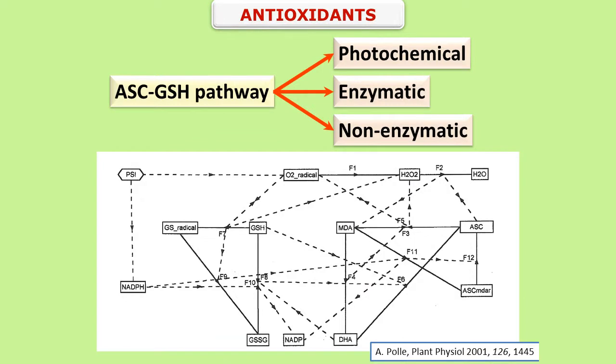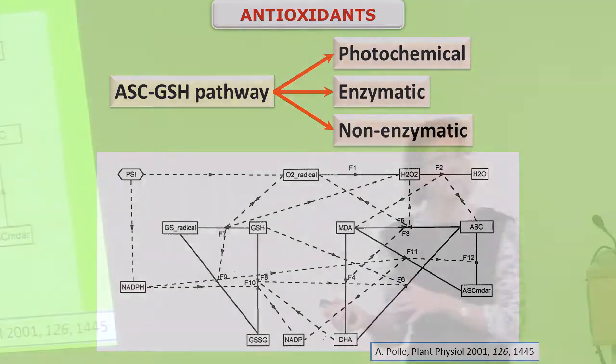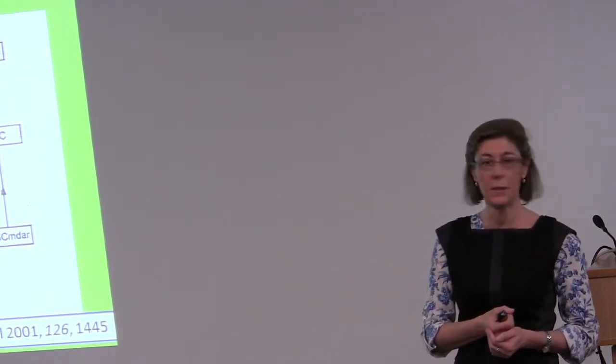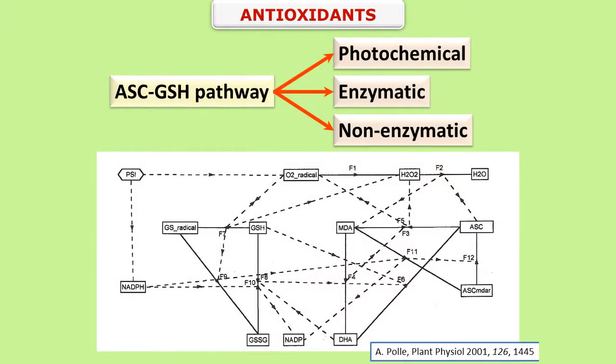Plants have different defense mechanisms to detoxify reactive oxygen species. On this slide, you can see one of the first models reported about the ascorbate glutathione pathway, which is one of the most important metabolic pathways to detoxify reactive oxygen species. This pathway involves a number of photochemical, enzymatic and non-enzymatic steps. This model includes a constant source of electrons from photosystem one (PS1), which has two competitive branches — one leading to the photogeneration of superoxide radicals and the other to the photoproduction of NADPH, the reducing power necessary to detoxify reactive oxygen species.